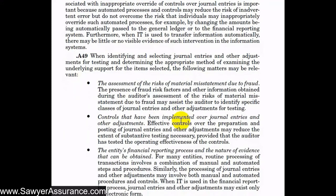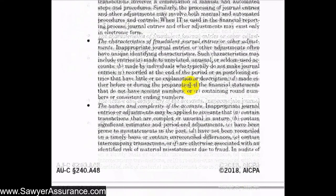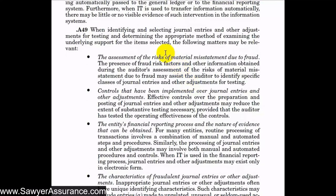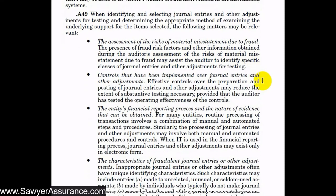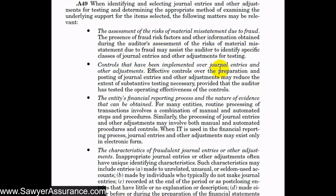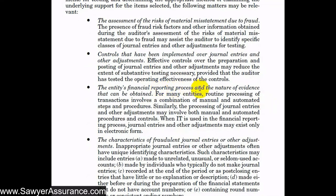When identifying and selecting journal entries to test — as well as other adjustments outside the general ledger — our selection depends on our assessment of the risk of material misstatement due to fraud. We might select those types of transactions assessed as more risky. We also consider the controls implemented over journal entries, since effective controls reduce the extent of substantive testing required. We also consider the entity's financial reporting process and the nature of evidence available, since many journal entries and adjustments have both automated and manual components, requiring us to understand both processes.